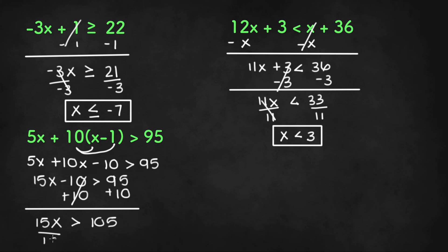Now once we divide both sides by 15, we'll be left with x is greater than, we do nothing to the sign since we're dividing by positive 15, 105 divided by 15 which is 7, and that will be our final solution.